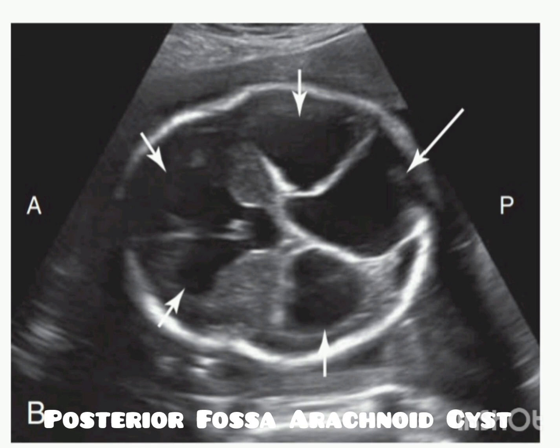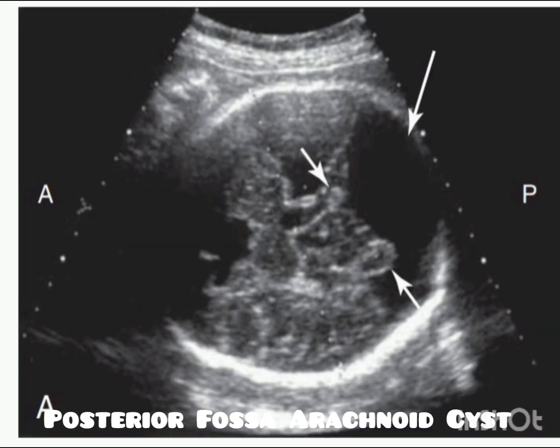In the absence of splaying of the cerebellar hemispheres or vermian defect, mass effect from the cyst can cause hydrocephalus and displacement and compression of the cerebellum, resulting in non-visualization of the cerebellum on antenatal ultrasound. This image is an example of posterior fossa fluid collection — mass effect from the cyst has resulted in hydrocephalus, indicated by the short arrows, and non-visualization of the cerebellum due to displacement and compression.